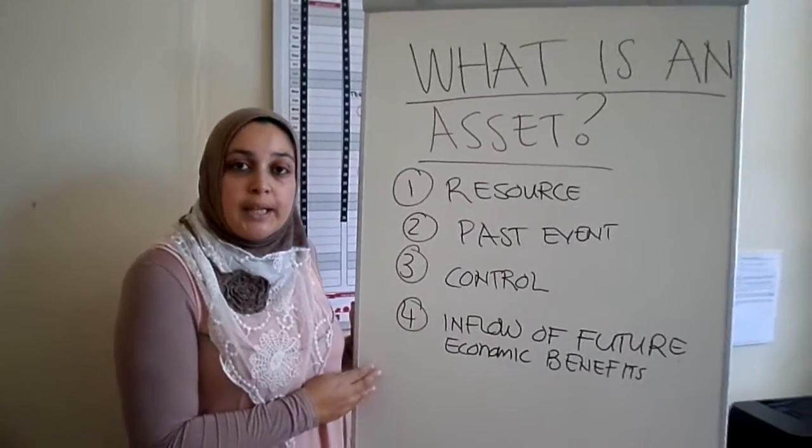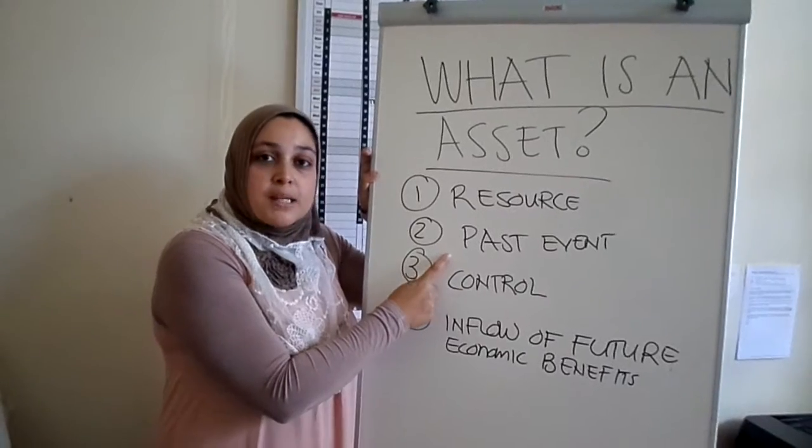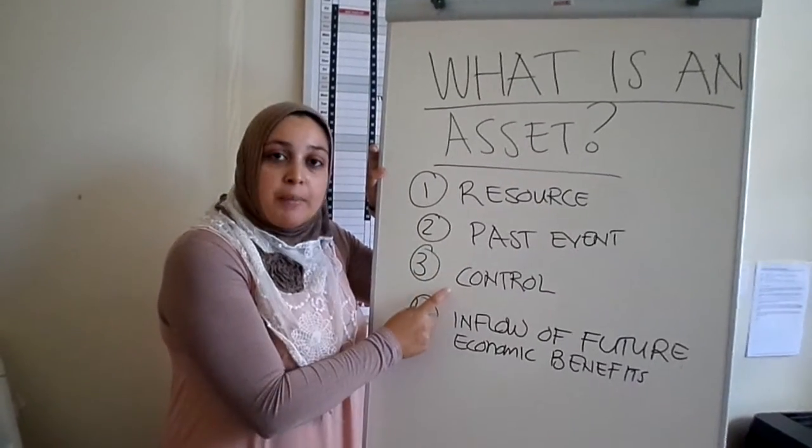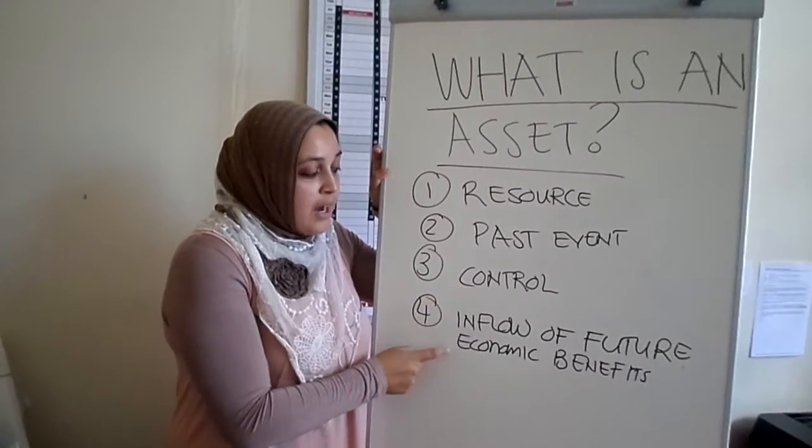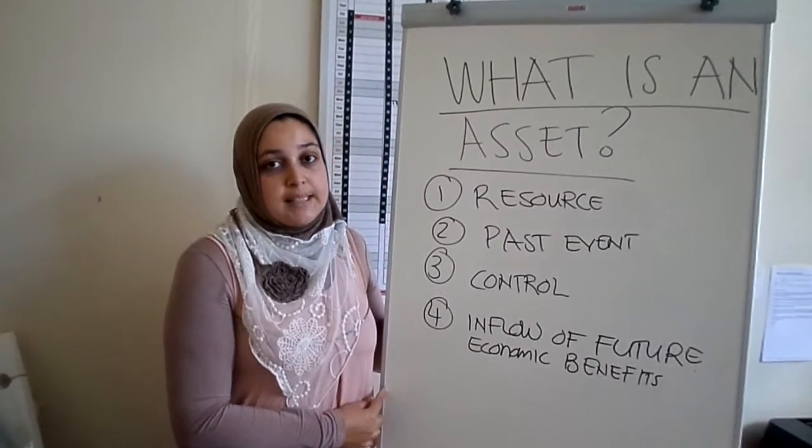So if we go through it again, the definition of an asset is a resource resulting from a past event controlled by the entity that will give rise to an inflow of future economic benefits. Thank you.